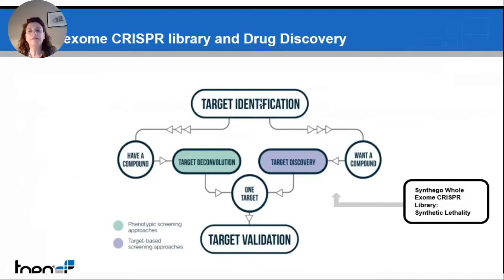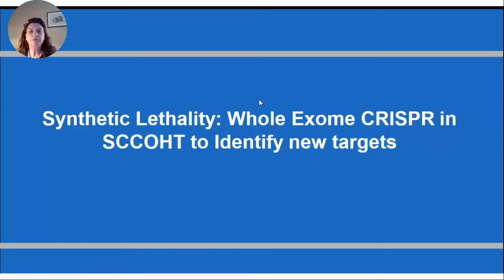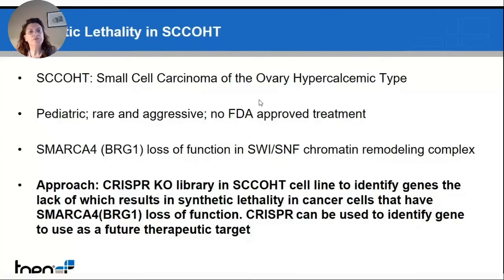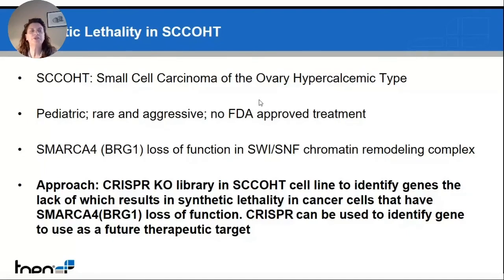A very useful platform to identify a new target is synthetic lethality — which by definition, as Scott explained, is the situation in which loss of function of two genes results in death of the cell. This is the approach we used to identify a target in SCCOHT. SCCOHT is the small cell carcinoma of the ovary hypercalcemic type, a very rare and aggressive pediatric cancer for which unfortunately there are no FDA-approved treatments. This tumor is driven by a loss of function mutation in one member of the SWI/SNF chromatin remodeling complex, encoded by the gene BRG1, as Scott just mentioned. In this study, we used a CRISPR library from Syntego to knock down genes one by one in the background of BRG1 loss of function to identify genes whose loss, together with lack of BRG1 expression, results in death of the cell.